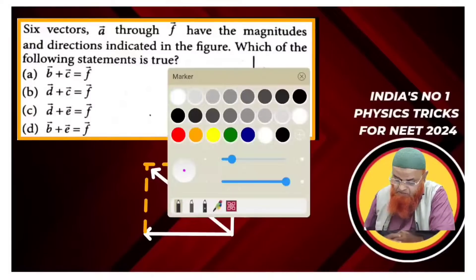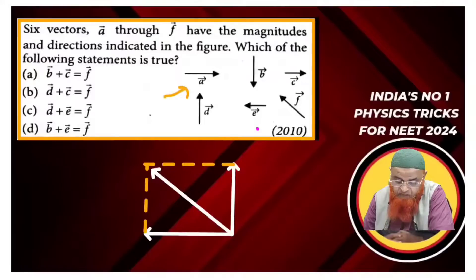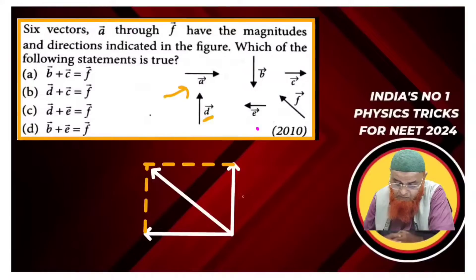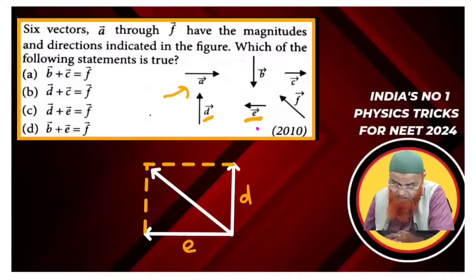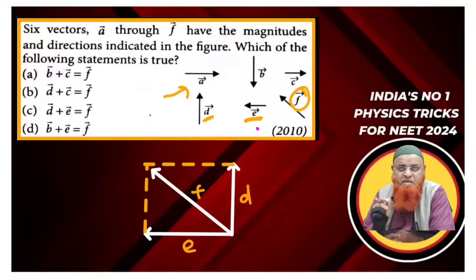This is a previous year question from 2010. In this question, we need to identify which of the given vectors resemble the parallelogram law. Observing the diagram, vector D can be imagined here, vector E can be imagined here, and vector F can also be identified.